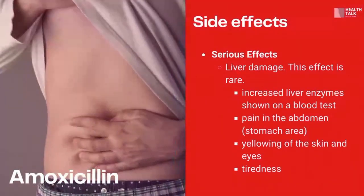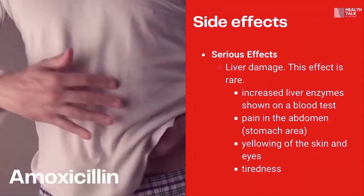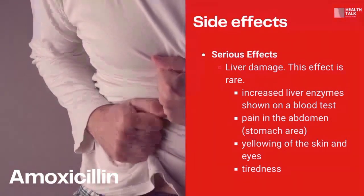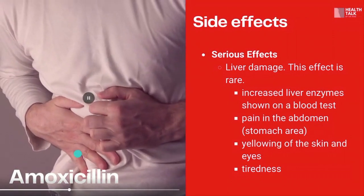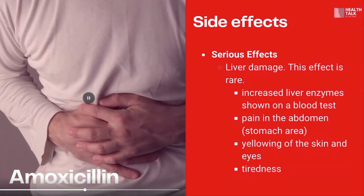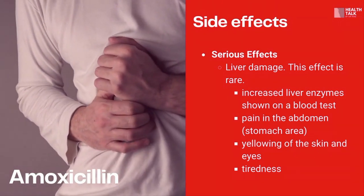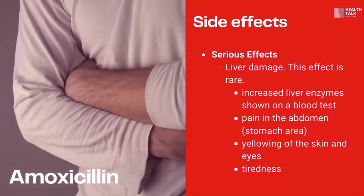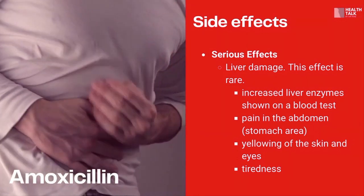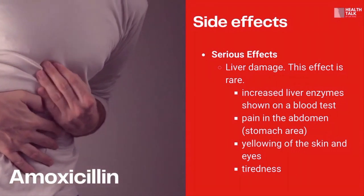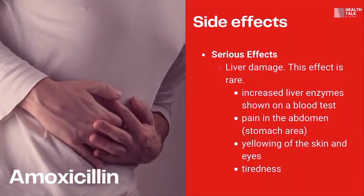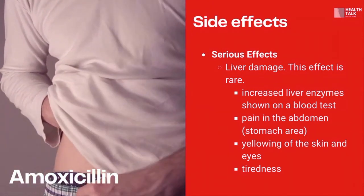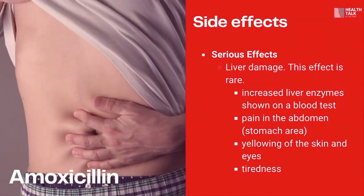We should also take note of serious adverse effects of this medication. Although rare, liver damage may occur — this might show up as increased liver enzymes on blood tests, pain in the abdomen, yellowing of the skin and eyes, and tiredness. That's why most doctors ask patients to have liver function tests — SGPT, SGOT — as well as kidney function tests, BUN and creatinine, to establish baseline levels of kidney and liver function before giving this medication.